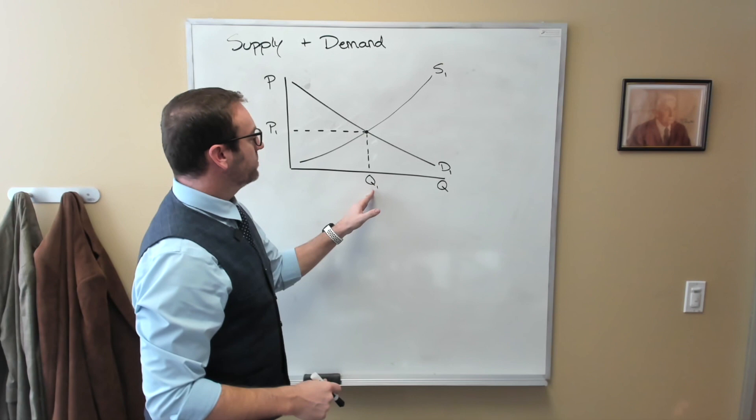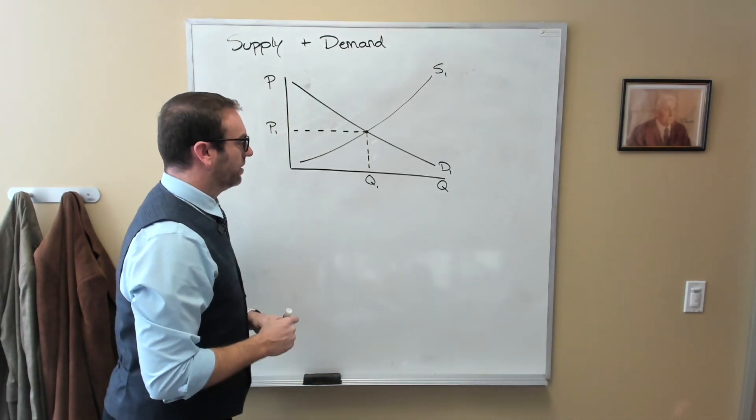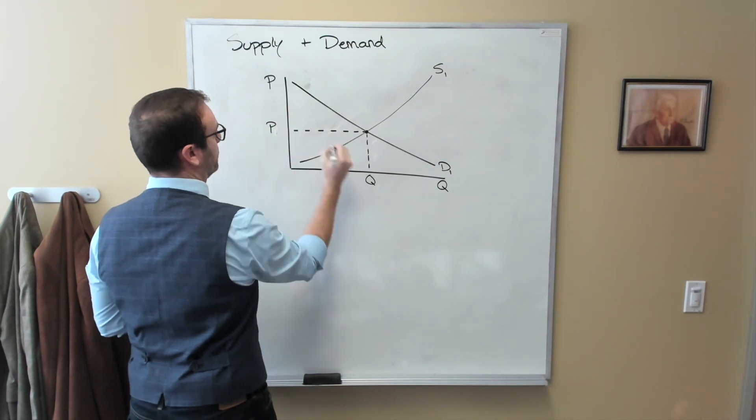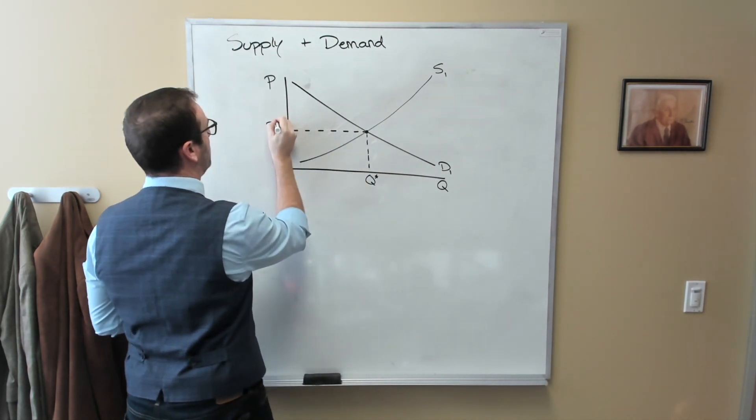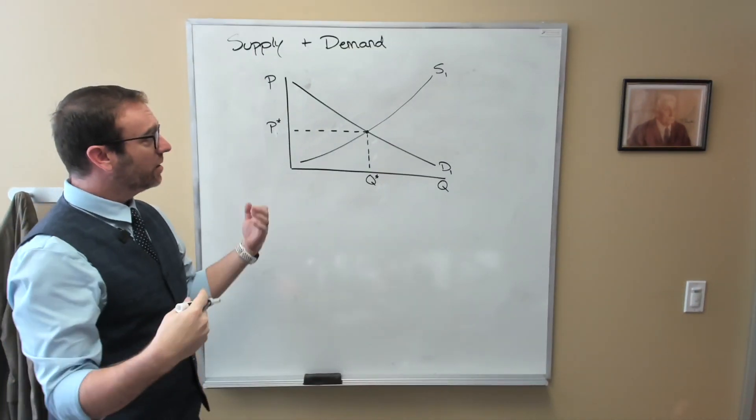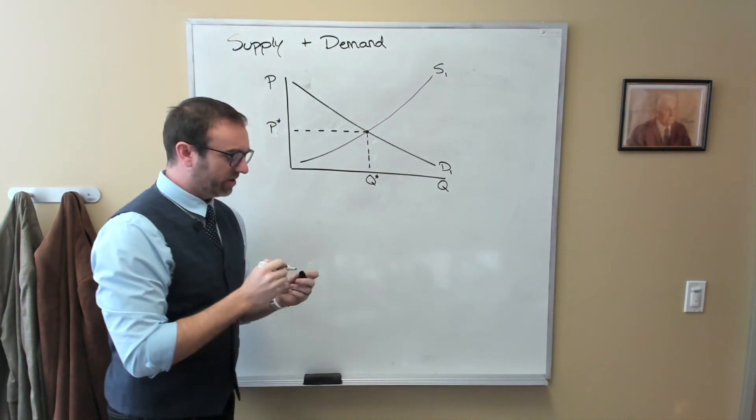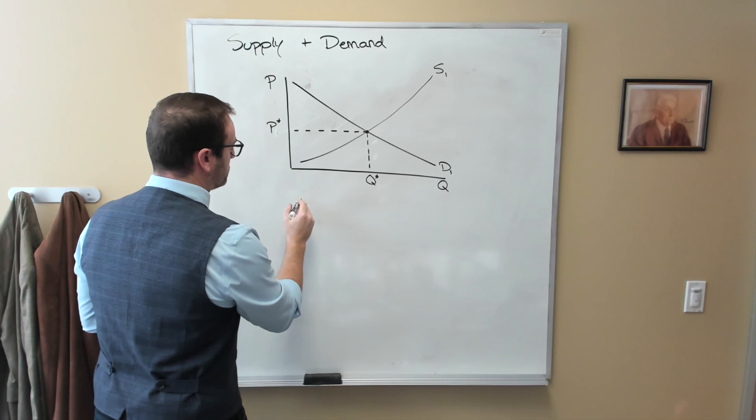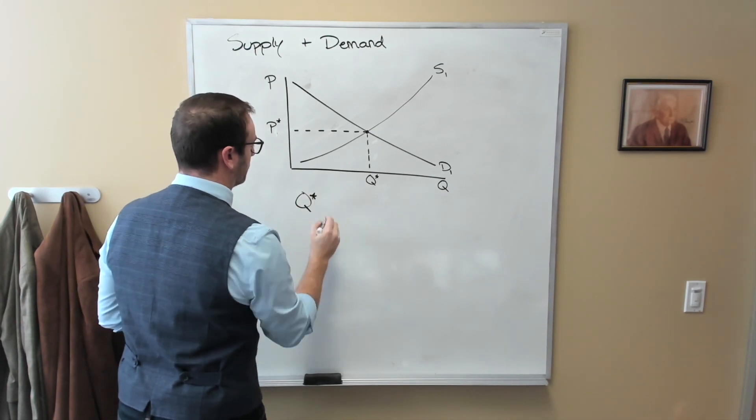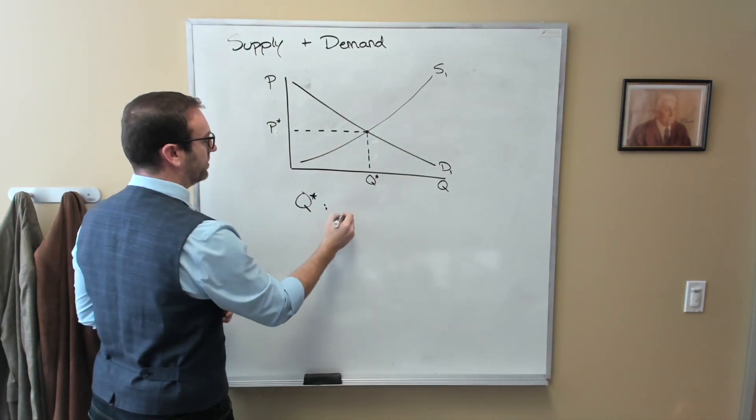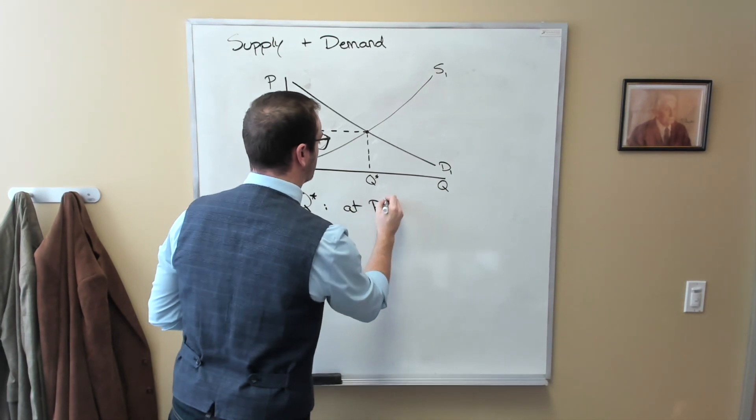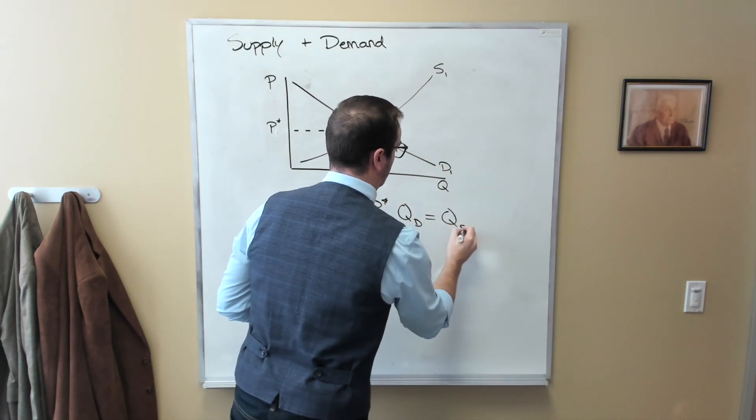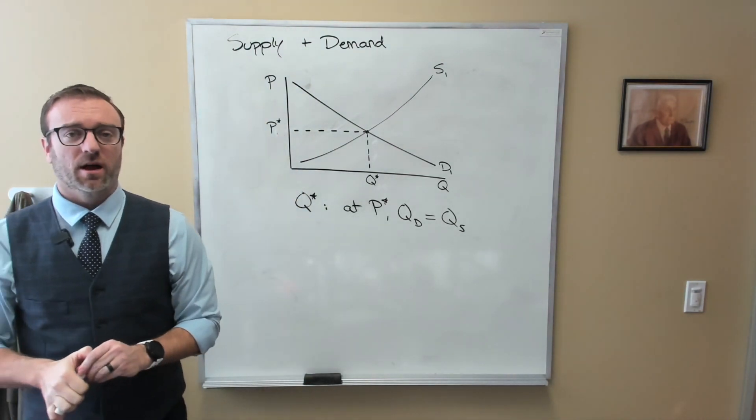Now what's so special about this Q1? Other textbooks or economists might replace this with Q star and P star to denote that it's the equilibrium quantity and the equilibrium price. Well, what's so special about Q star is that at P star, the quantity demanded is exactly equal to the quantity supplied.